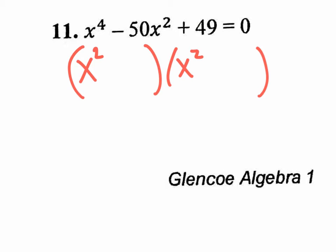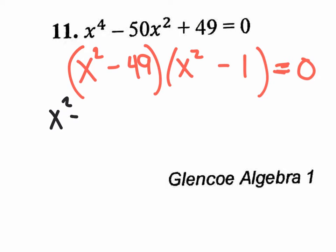You can still use this thought process: what times what is c (positive 49) that if you combine together give me negative 50? That's so easy that some people get confused — it's negative 49 times negative one. So at this point you could set it equal to zero, and since you have something times something equals zero, you could split them, or you could continue to factor.